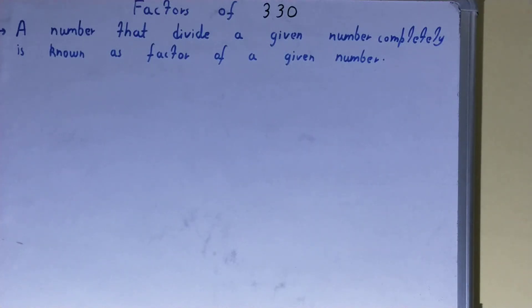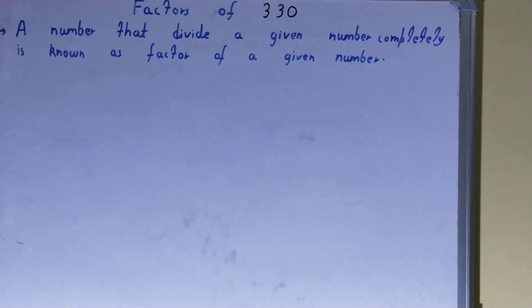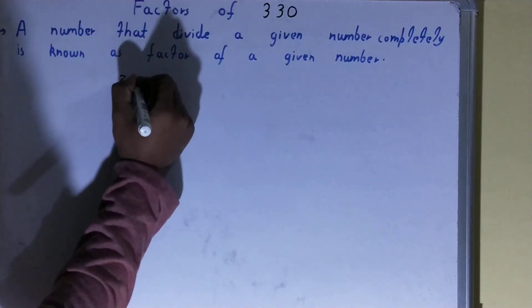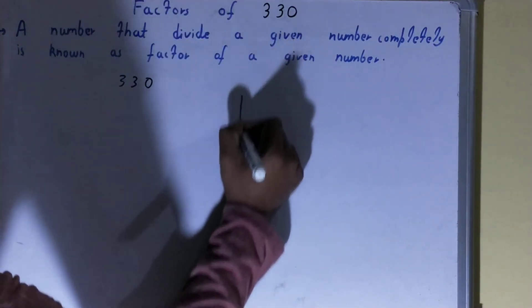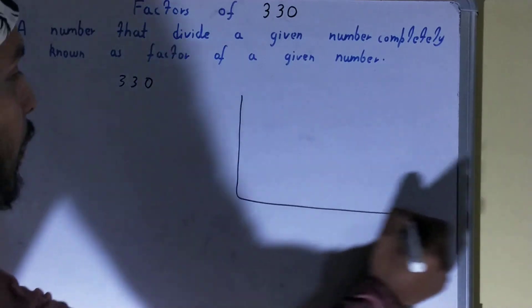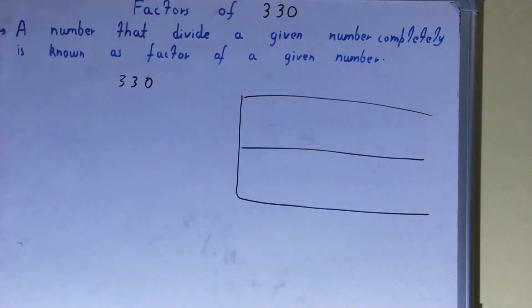Hello friends, and in this video I'll be helping you with the factors of the number 330. So let's start. To find it out, you need to write the number like this and draw a factor table. Once you are done with that, what you need to do is start with the lowest natural number.